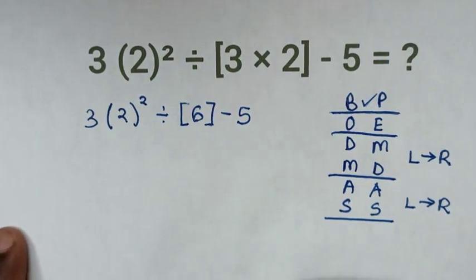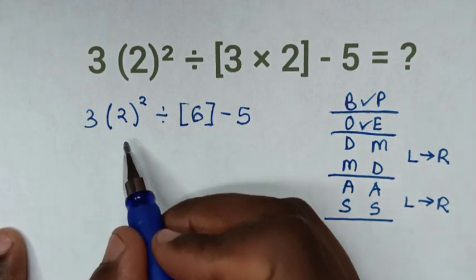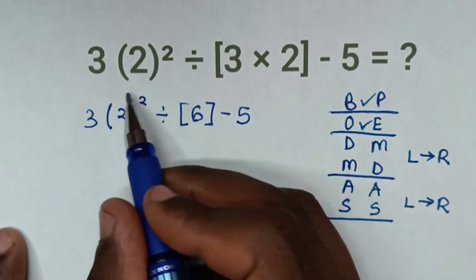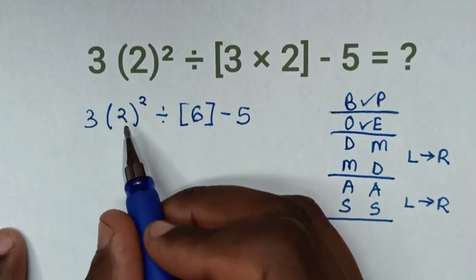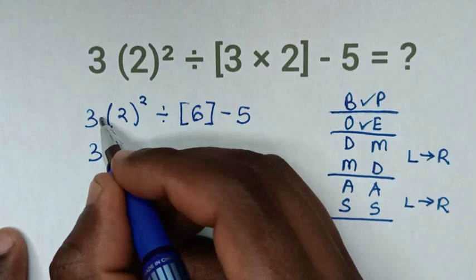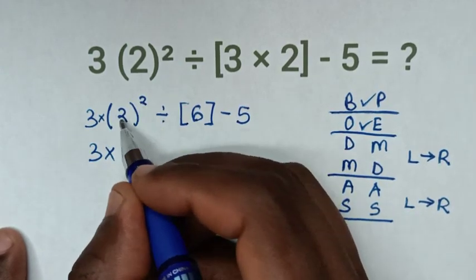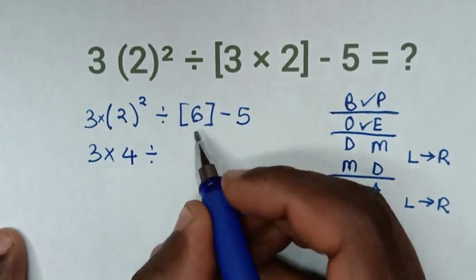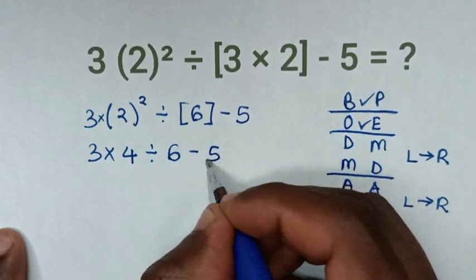Then in the next step, we'll deal with this order or exponent. We have 2 to the power of 2, which is 2 times 2 equals 4. So it will be 3 times 4, then divide by 6, then minus 5.